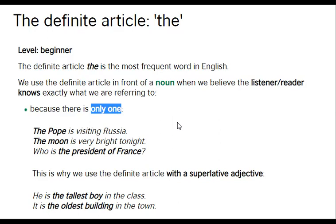The Pope is visiting Russia. The moon is very bright tonight. Who is the president of France? Remember, there is just one Pope all over the world. There is just one moon around the earth, and there is just one president of France — not two, not any more. This is why we use the definite article with a superlative adjective.